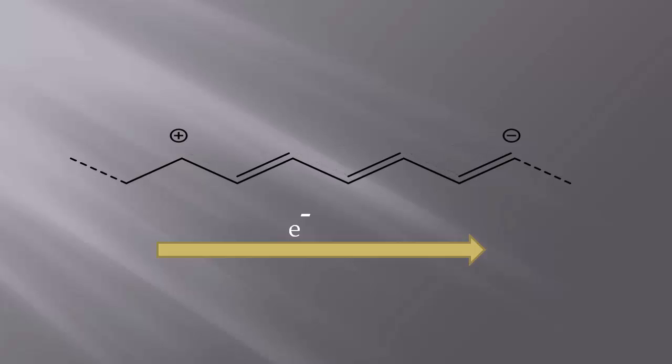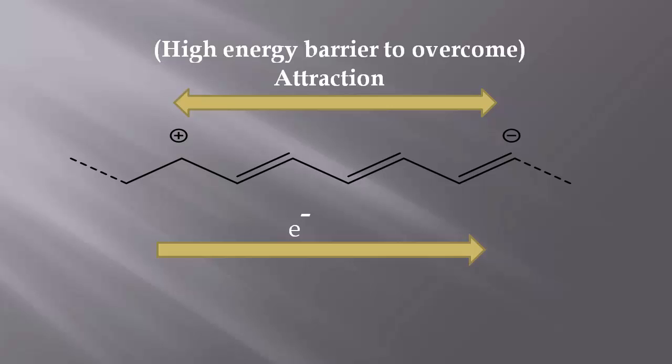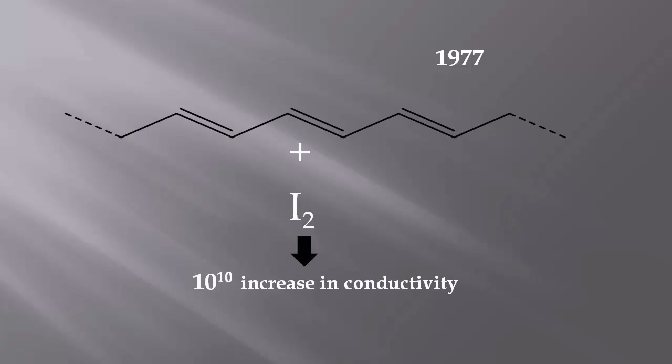The delocalized pi bonds suggest that electrons can move up and down the chain freely. However, this is not the case, as this is greatly hindered by coulombic forces leading to very poor conductivity in the neutral form. In 1977 it was discovered that polyacetylene can be reacted with iodine leading to a massive increase in conductivity.